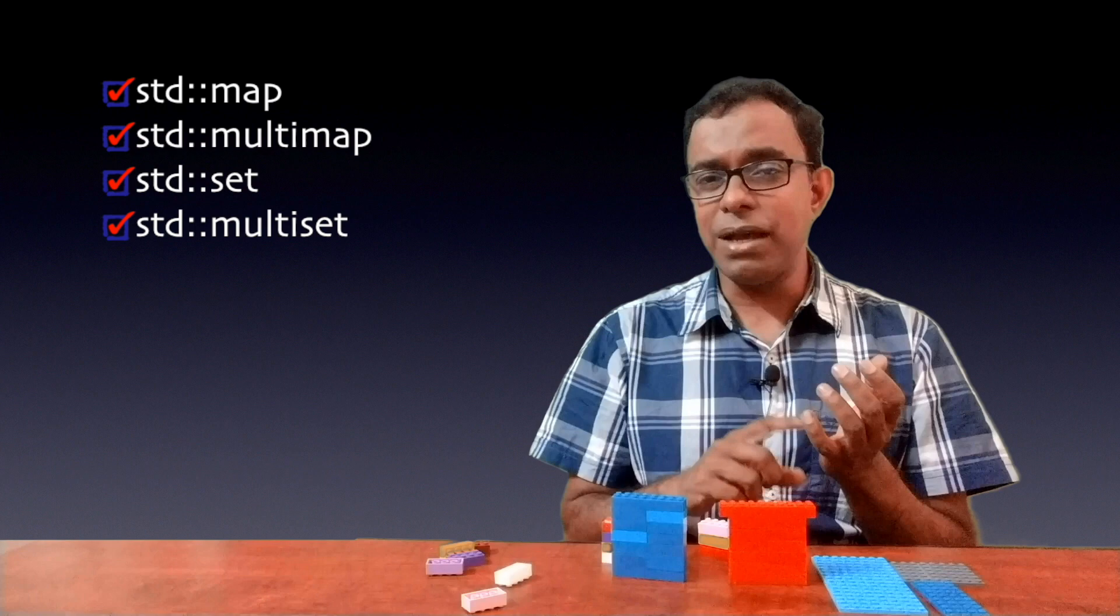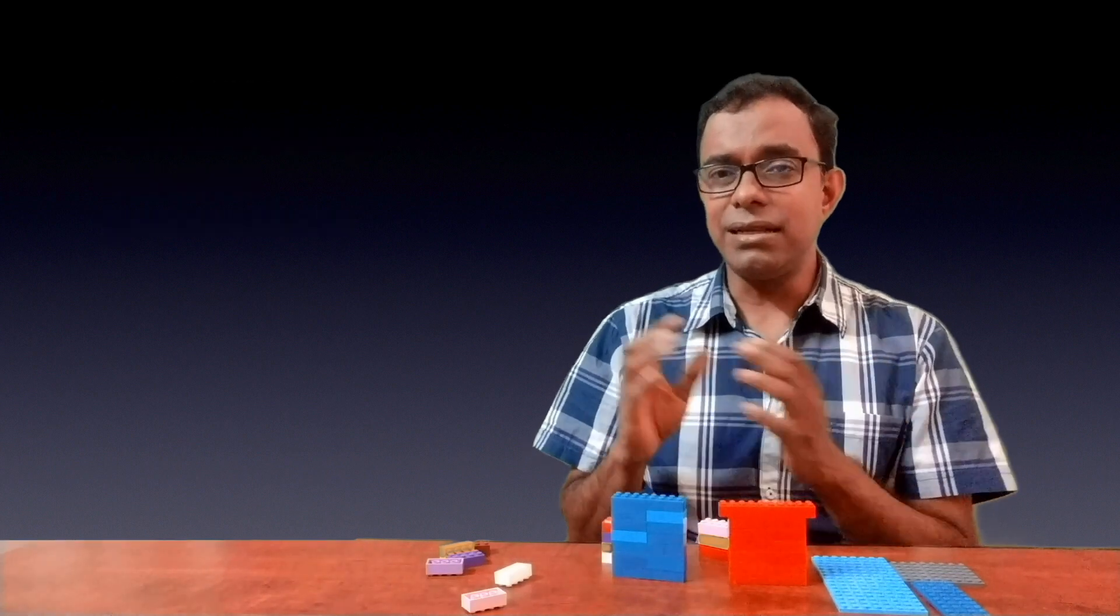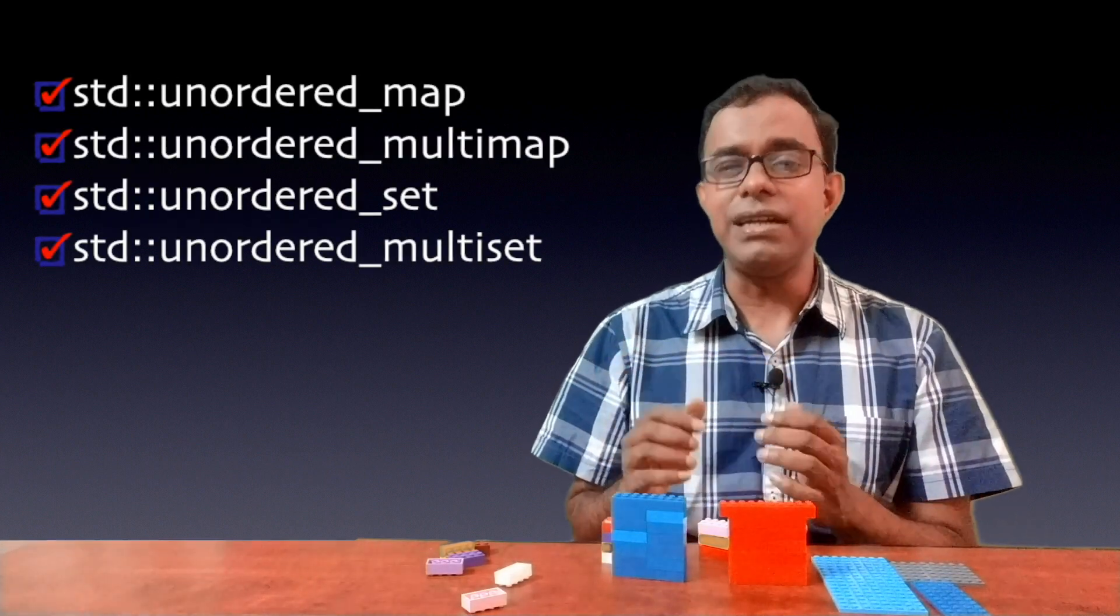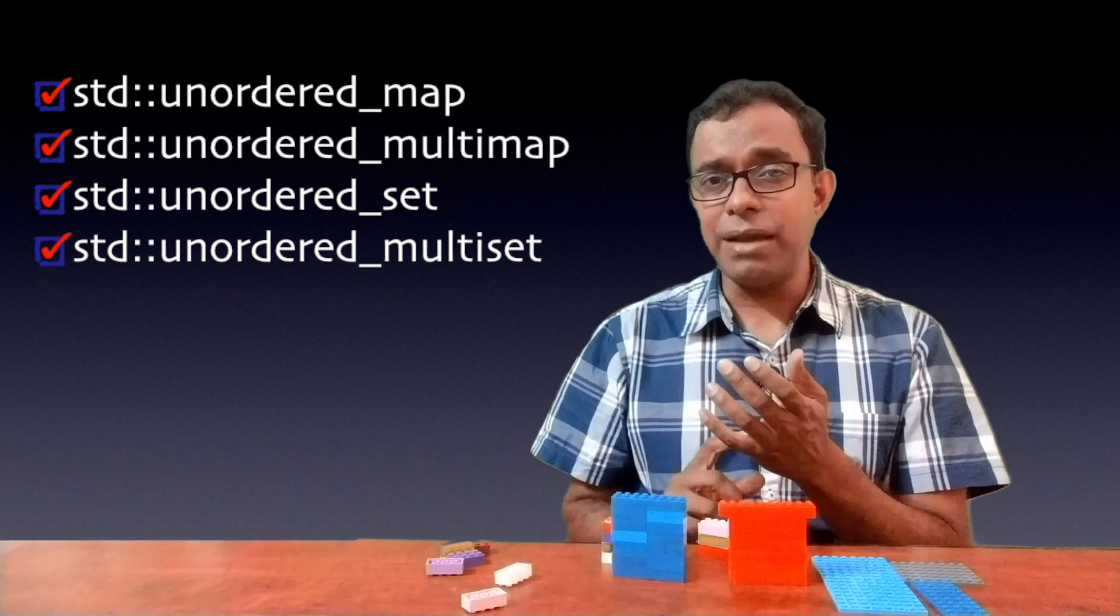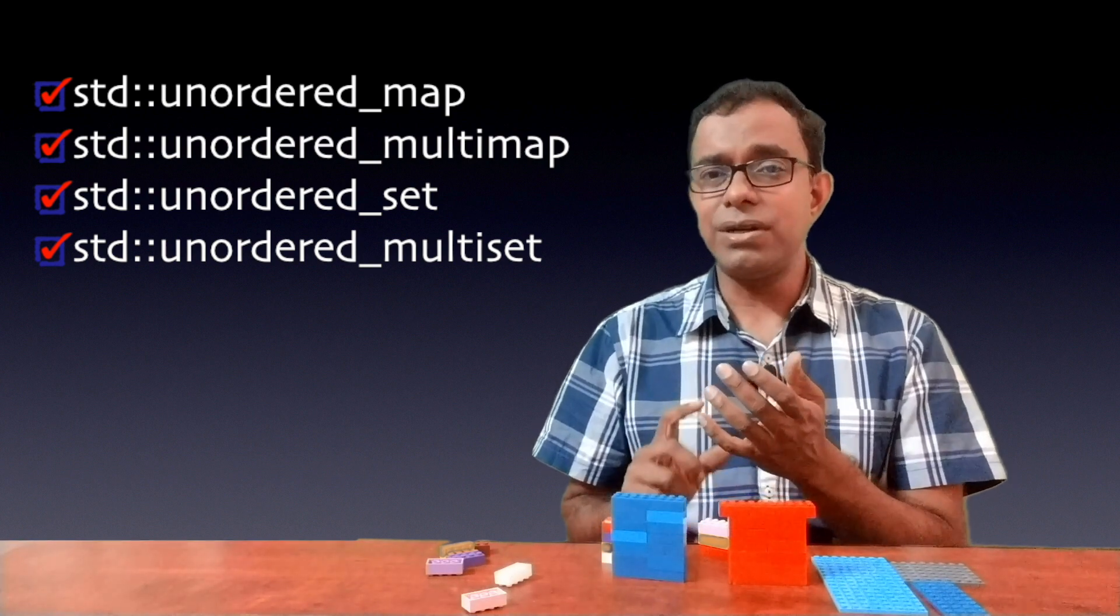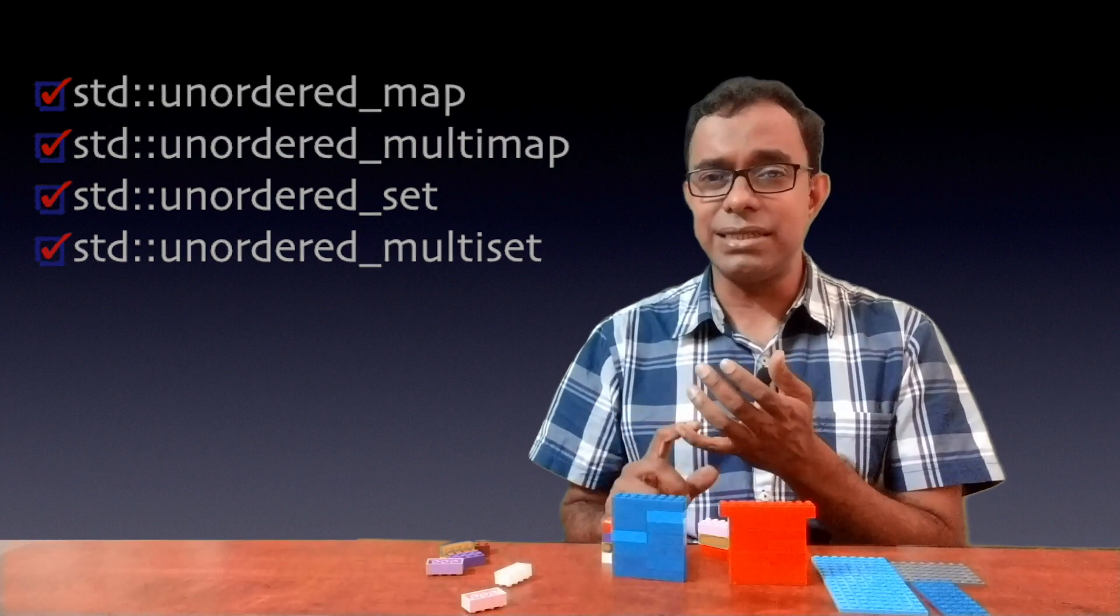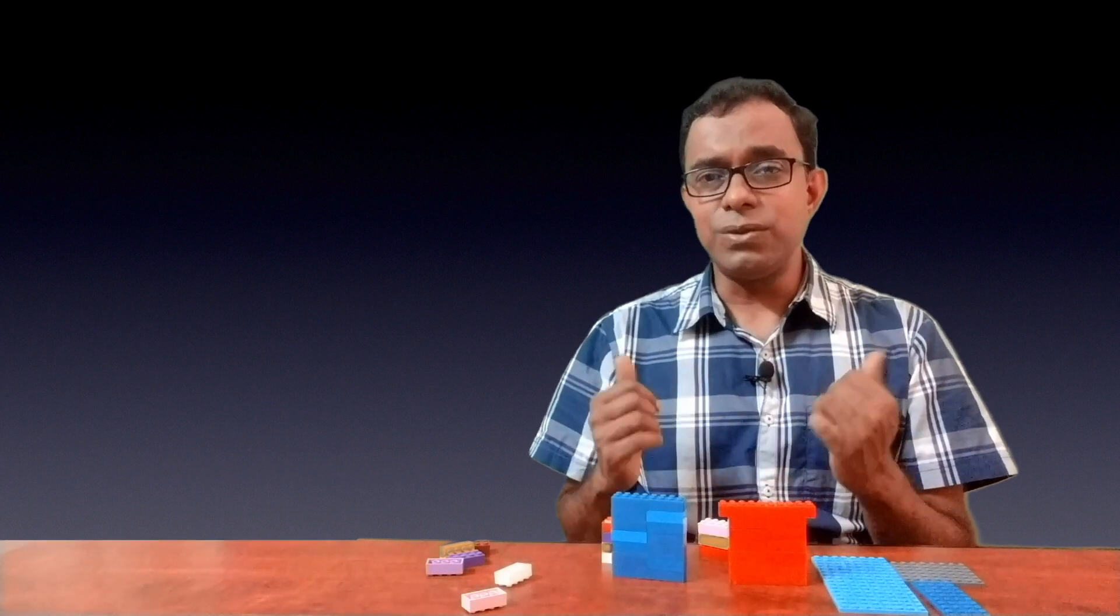There are two types of associative containers. One is called map, multimap, set and multiset. Another is unordered version of it which is called unordered map, unordered multimap, unordered set and unordered multiset. What is the difference between these two types?